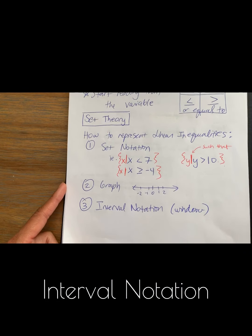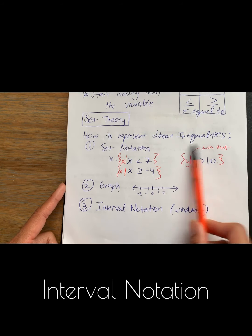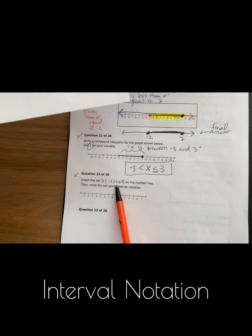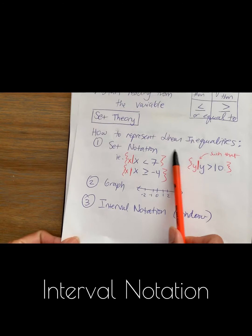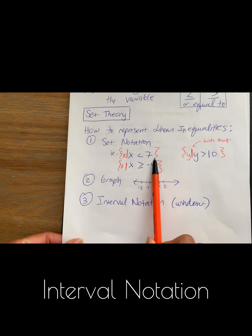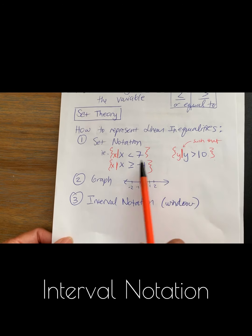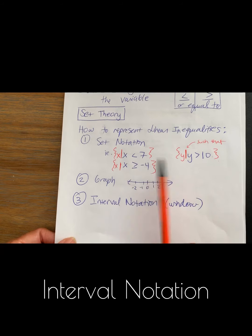Sets could be written or represented in different ways. So these are linear inequalities, meaning we have the less than or greater than sign. Set notation is what we're used to writing: x is less than 7, x is greater than equal to negative 4, y is greater than 10, things like that. We have greater than or less than and then there's a variable.